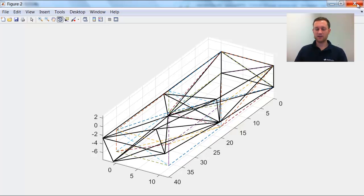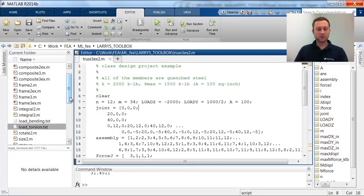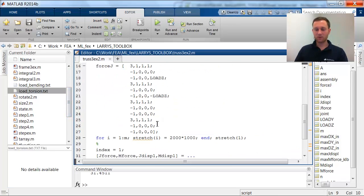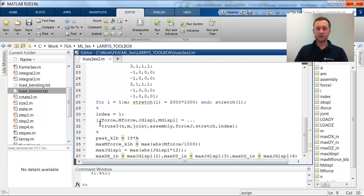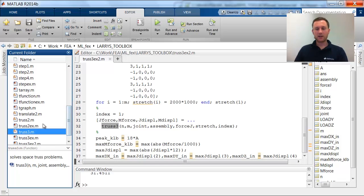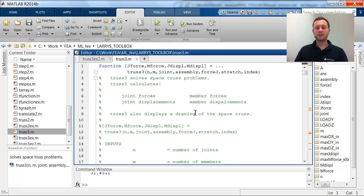This is very easy using that method. What I would like to do now is just to go through the script. This is a function Larry calls truss3.m, we will find that here. And what I want to show you is how easy the stiffness method can be coded.